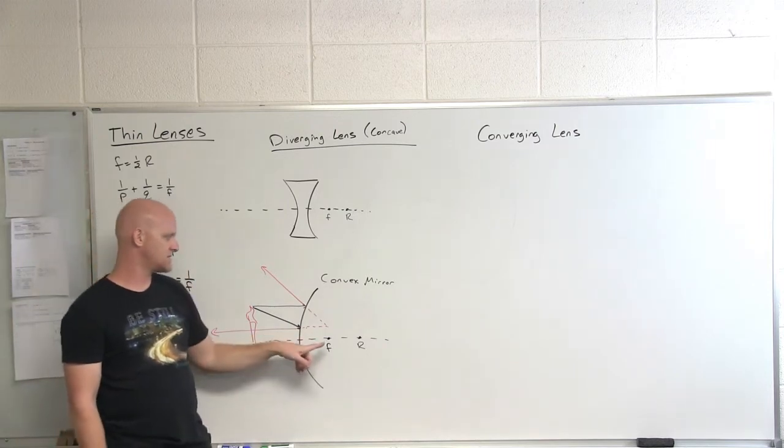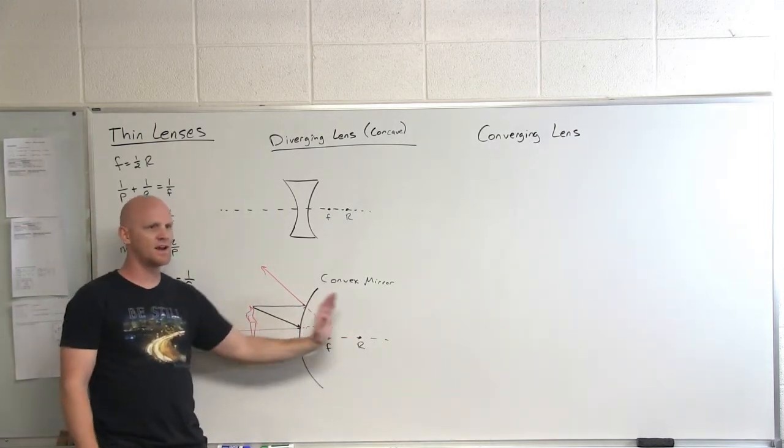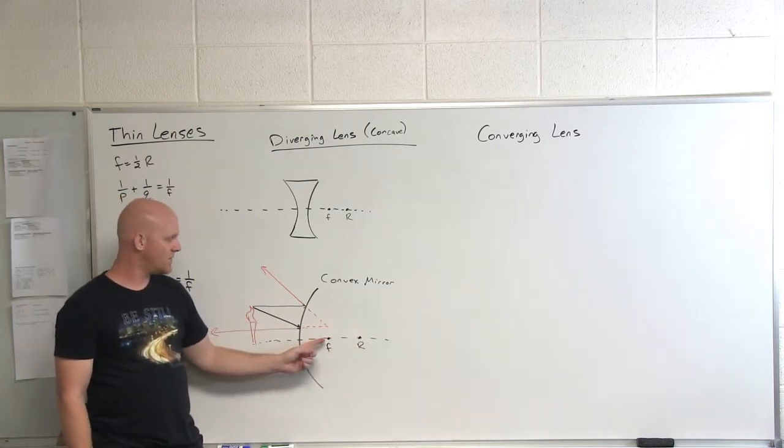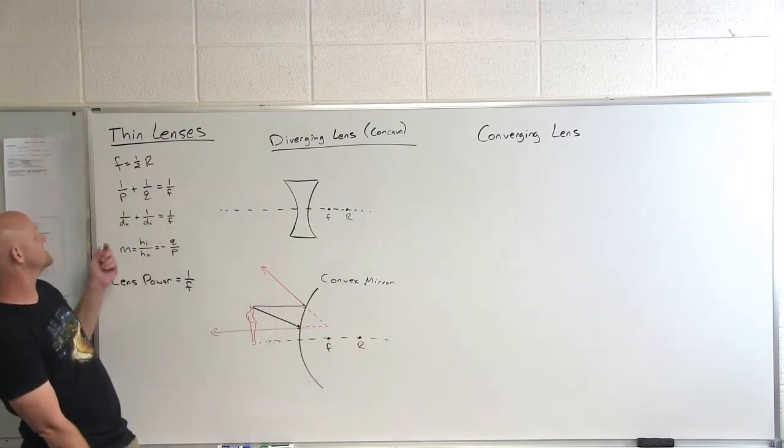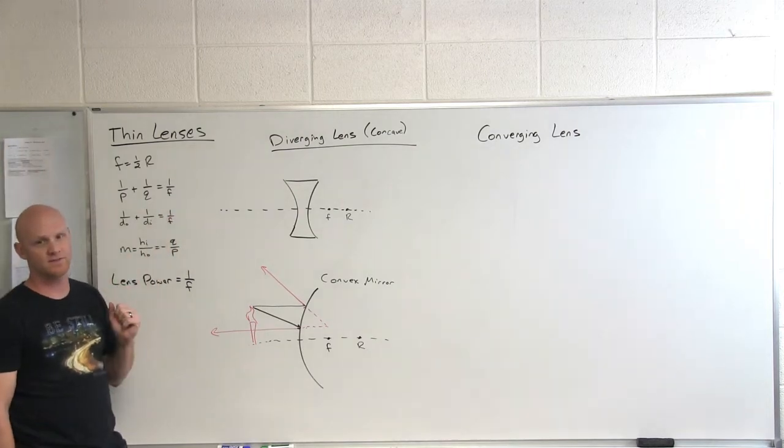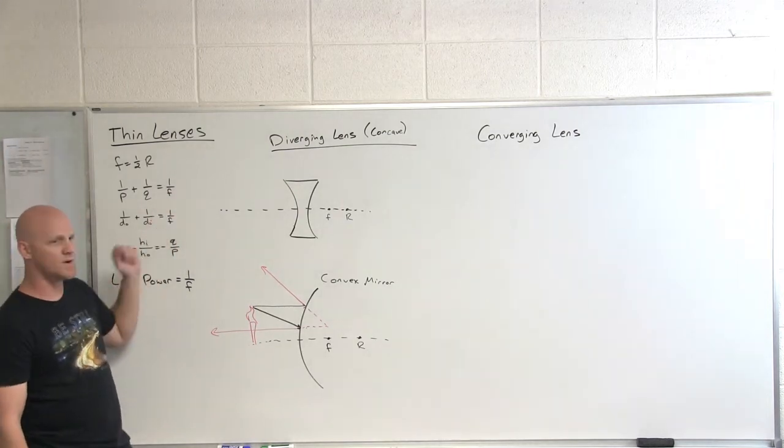So one thing we didn't mention here is with your radius of curvature being on the side of the mirror where you can't see, and the focal distance as well. When you plug your focal distance in for a diverging lens, you have to plug it in as a negative number. It's a negative focal distance when you start doing the calculations with the equations.